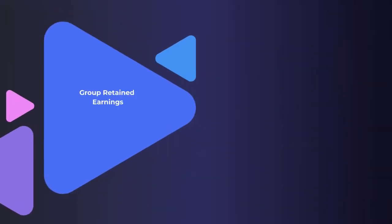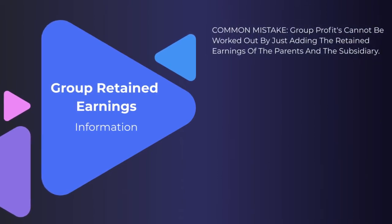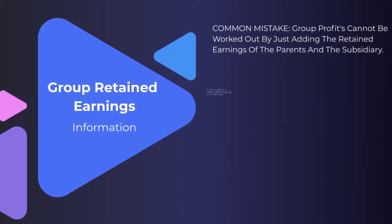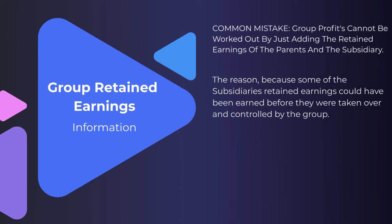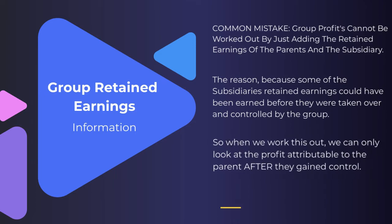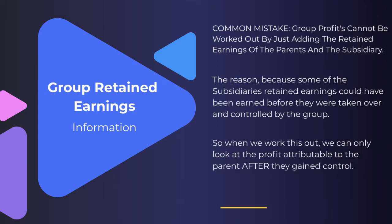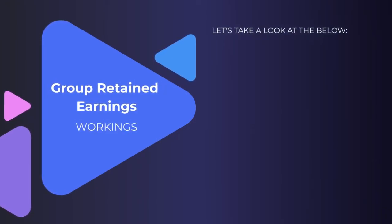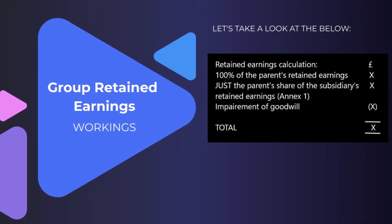Next, let's look at the group retained earnings. A common mistake is thinking you can work out the group's profits by simply adding the retained earnings of the parent and subsidiary together — it doesn't work that way. Some of the subsidiary's retained earnings may have been earned before it was taken over and controlled by the group. We can only include profit attributable to the parent after they gained control. So we take 100% of the parent's retained earnings at period end, then add just the parent's share of the subsidiary's retained earnings — if the parent owns 60%, we take 60% of those retained earnings — then deduct any impairment of goodwill to arrive at total group retained earnings.